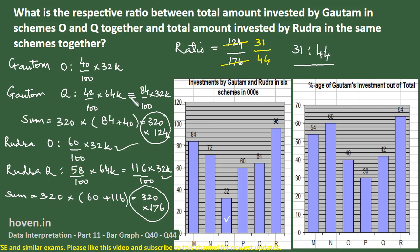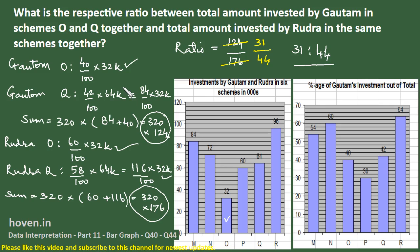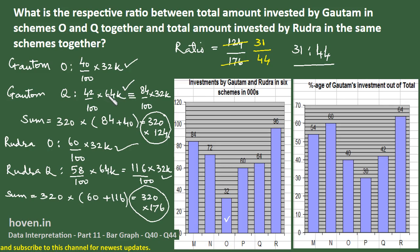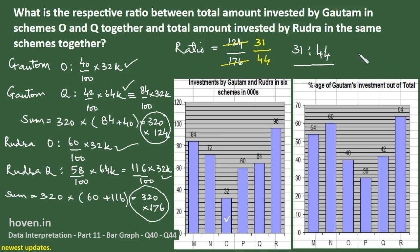Presence of mind simplified the calculations here: noticing that 32 and 64 are multiples, I factored out 32, kept it common for both persons, and the 320 cancelled in the final ratio. The required answer is 31 : 44.